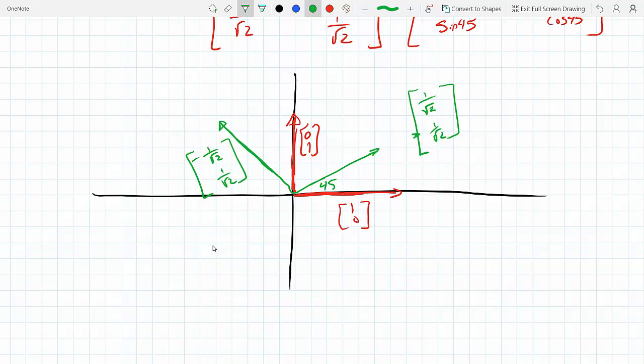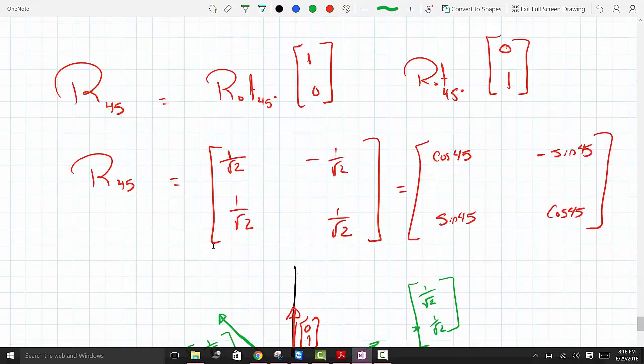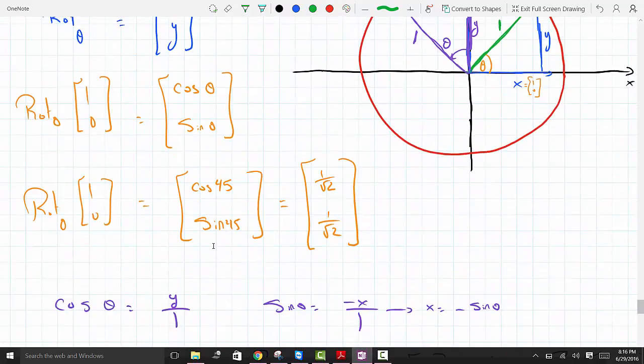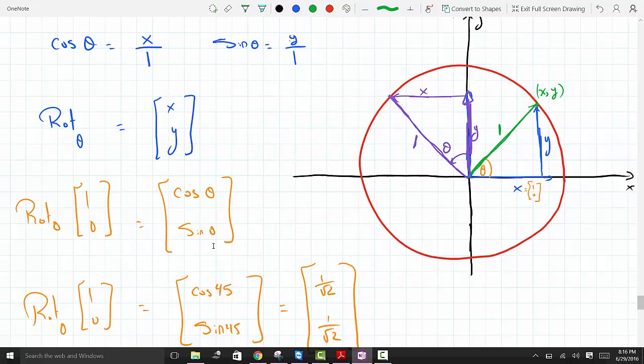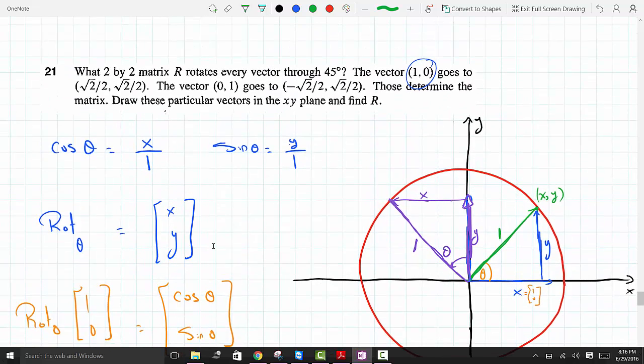That does it. So this would enable us to rotate any vector through any angle in the xy-plane through a rotation matrix R.